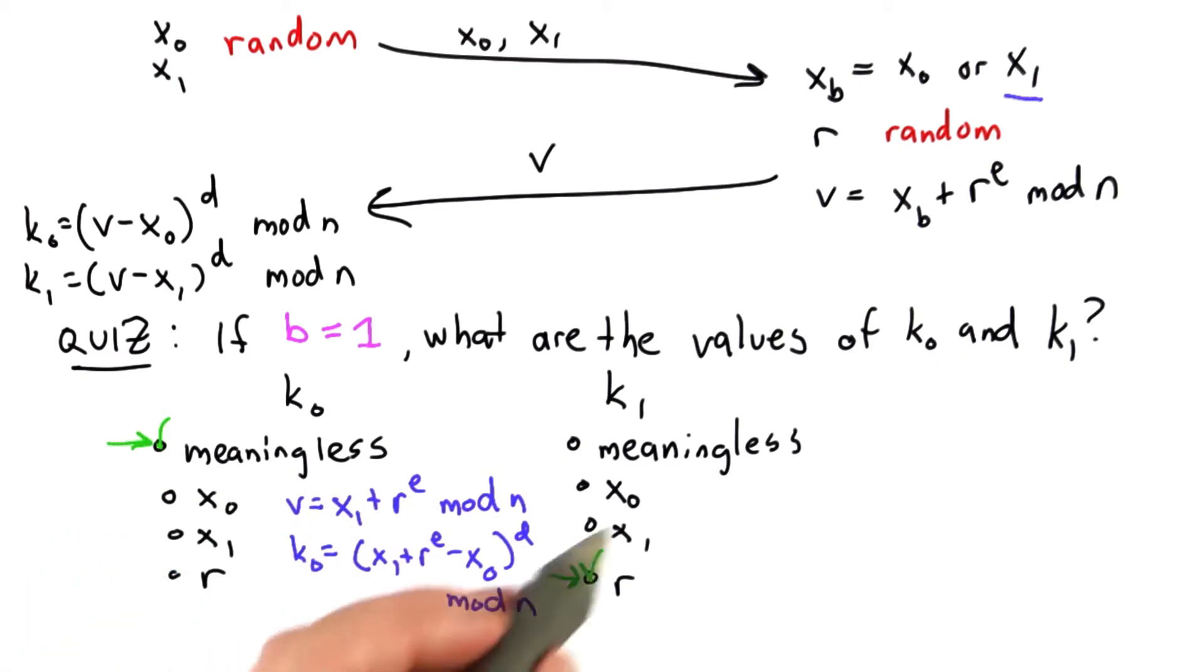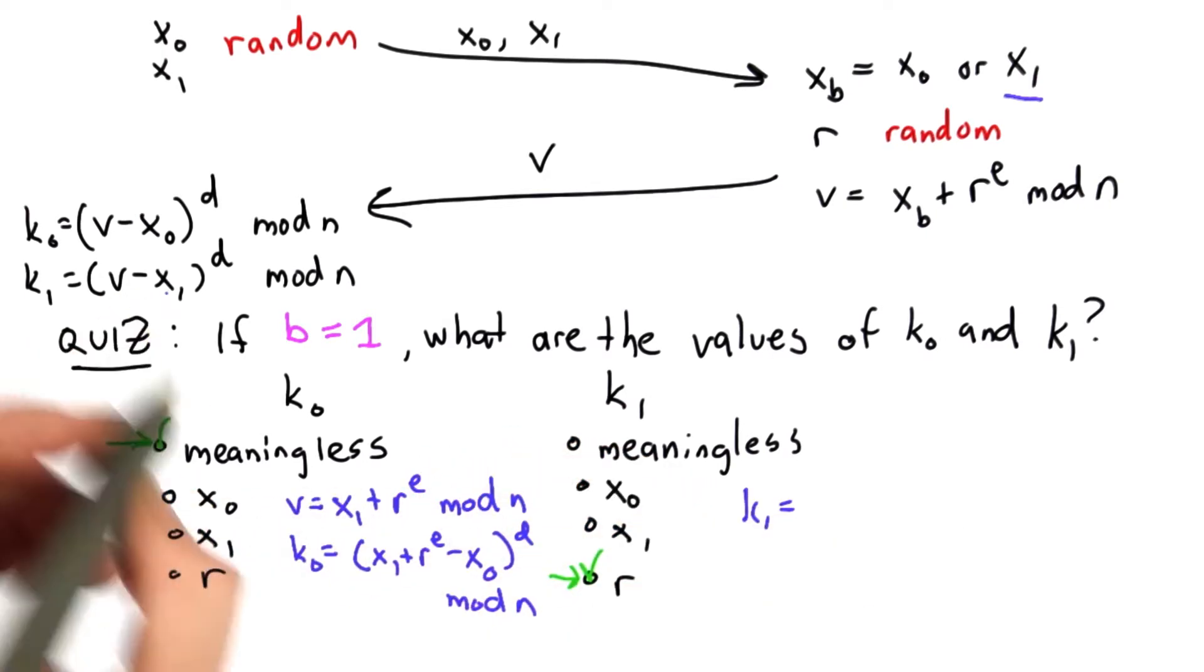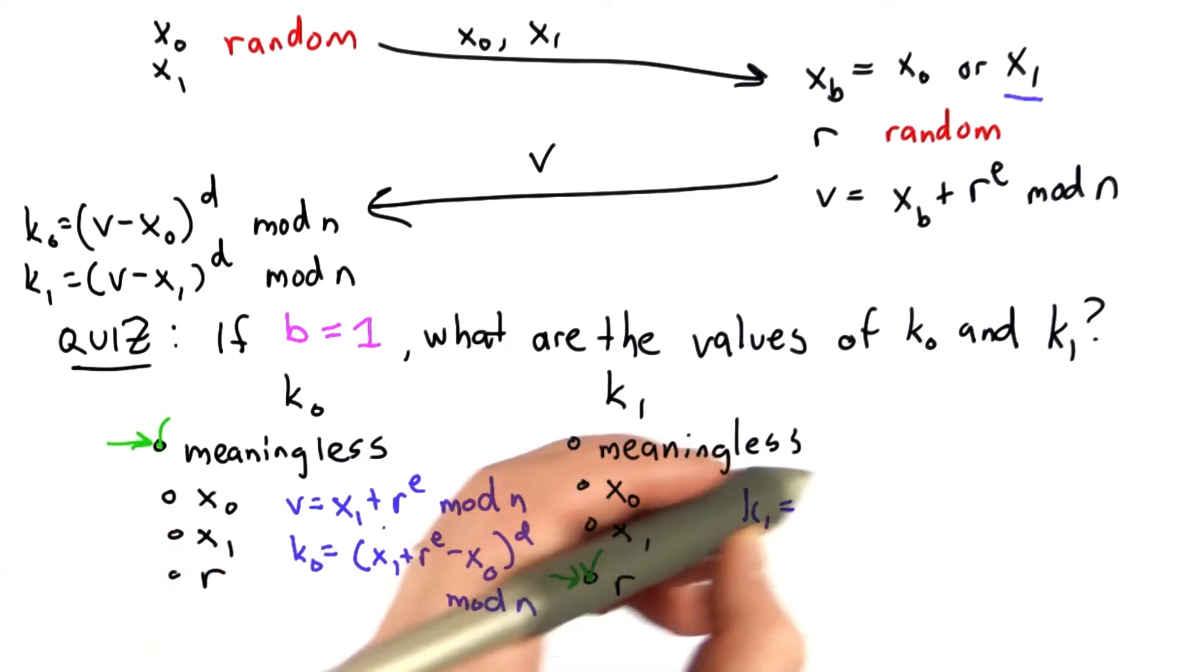The value of k1, though, is meaningful, and it's in fact the value of r. The reason for that is the value of k1 equals v minus x1, which removes the x1 from that value.